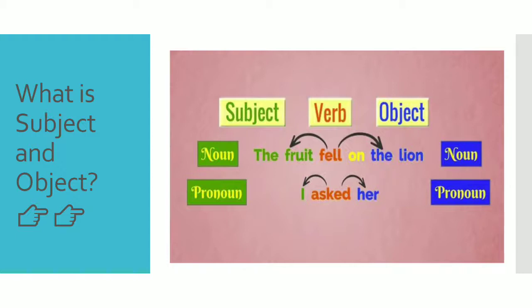What is the object? When someone or something is receiving the action, it becomes the object. The verb in a sentence very often tells of an action that must be done to somebody or something. The person or thing receiving the action becomes the object. Here, 'the lion' is receiving the action, so it is the object. Subject and object are always a noun or pronoun.